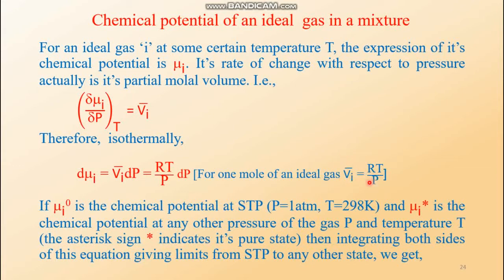We have to integrate both sides and assign limits. Since the gas is pure and not mixed up, in the pure state its chemical potential should be mu i star. This asterisk sign indicates its pure state when it is not in a mixture.